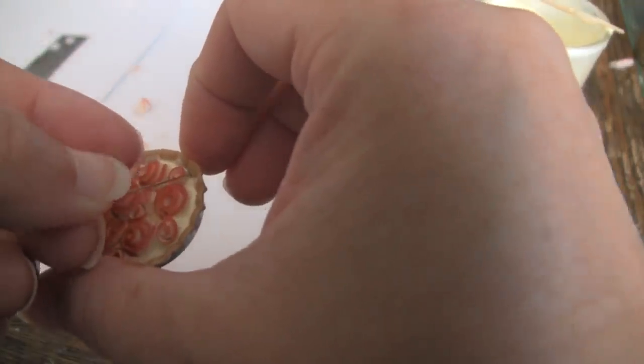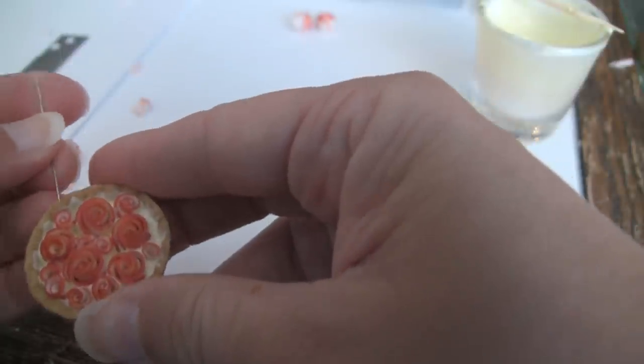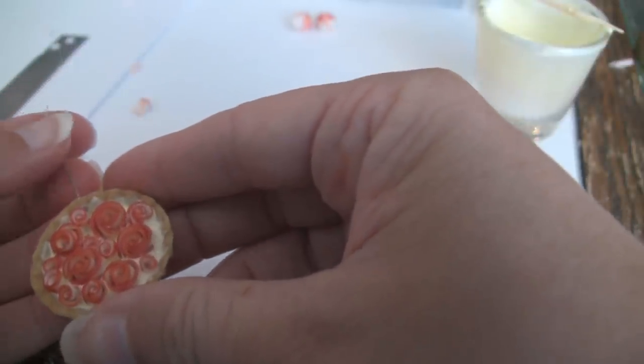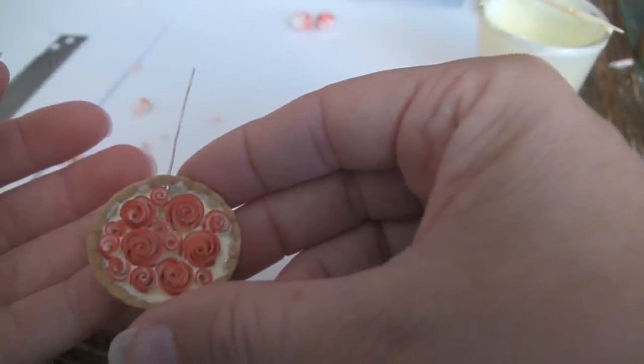Put a head pin in the hole that we created. I'm going to see if I can position it under an apple rose, and we're going to bake it like that.